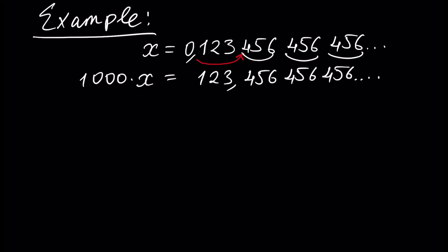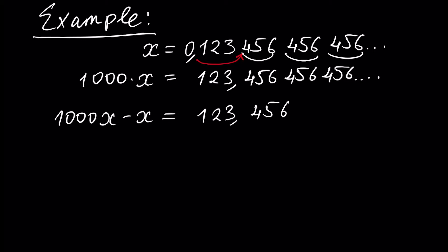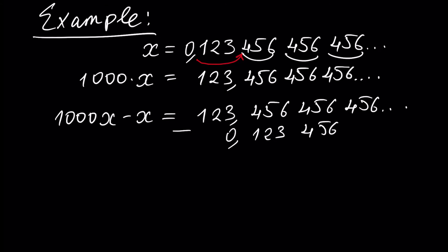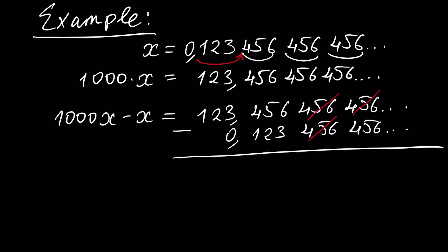Next, we perform a subtraction and write 1000x minus x equal to 123.456456456... minus 0.123456456456... If we subtract the second number from the first, we see that the infinite tails of these two numbers offset each other, and we will have no tails as a result.